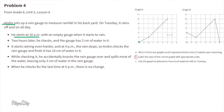Part b: Label the axes of the correct graph with appropriate units. It says that two hours later he checks the gauge and the gauge has two centimeters of water in it, meaning the units would be hours and centimeters. The horizontal units across the bottom are time of day in hours, and the vertical units are centimeters representing the height of the water in the rain gauge.